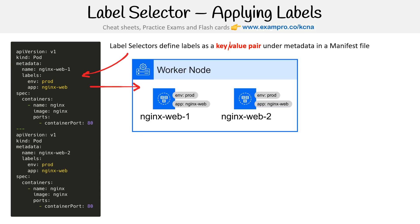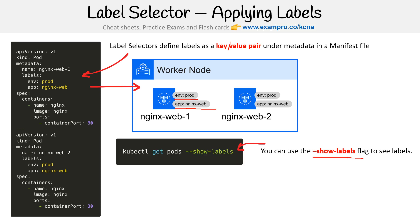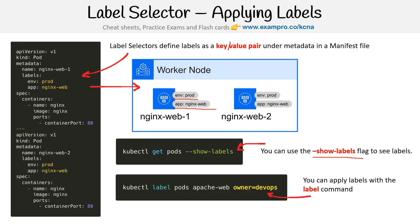On the worker node, for example, this one says 'env: prod' and then 'app: nginx-web', just to kind of match up what that means. You can use the '--show-labels' flag to see all labels — here's an example for pods, and this will work for a variety of different Kubernetes objects. You can also apply labels with the label command, for example: 'kubectl label pods apache-web owner=devops'.